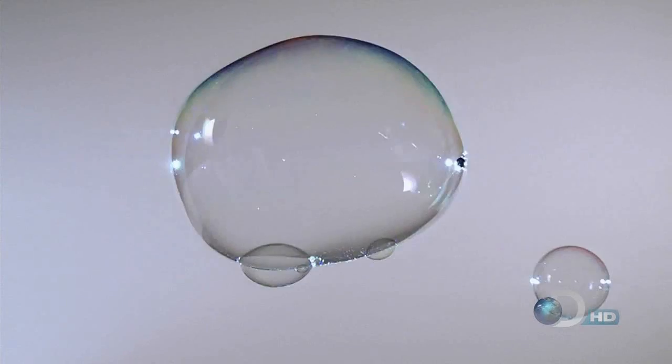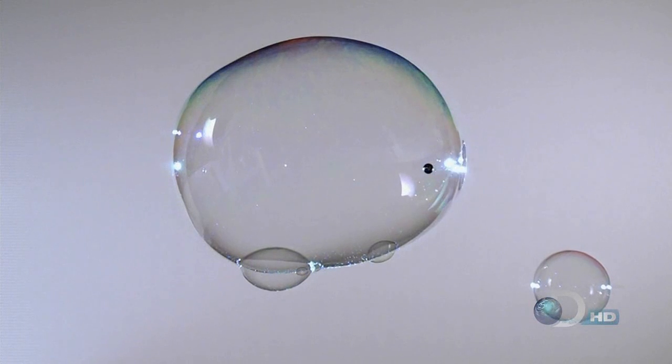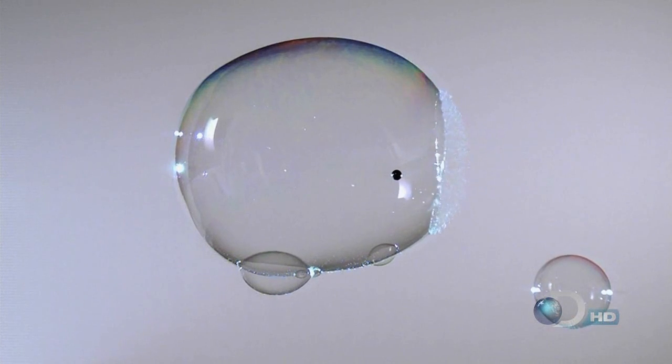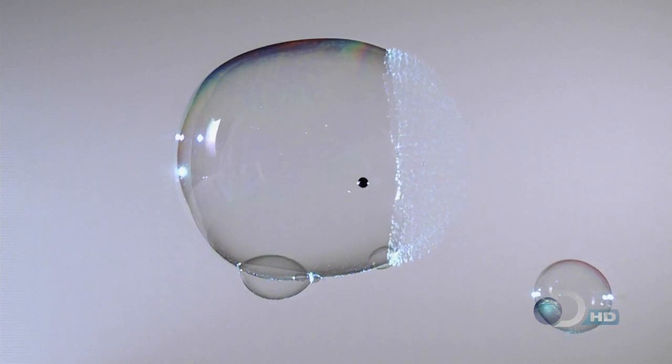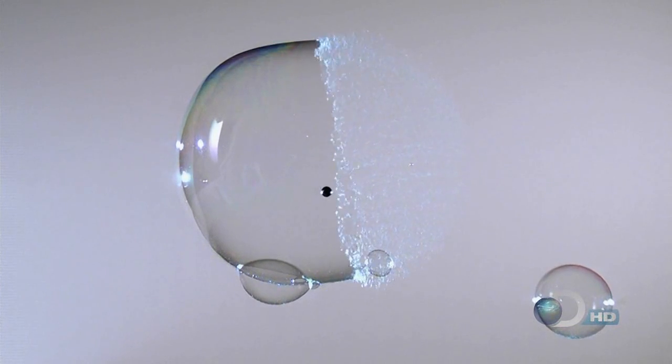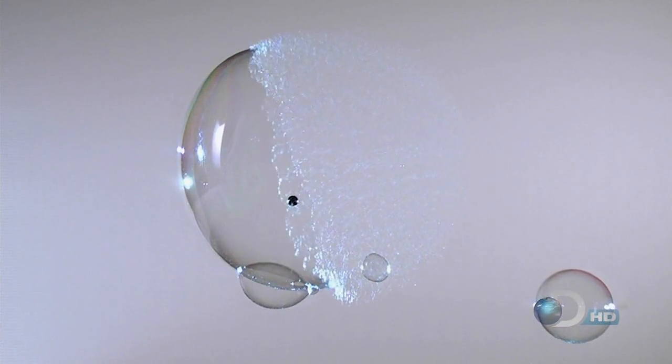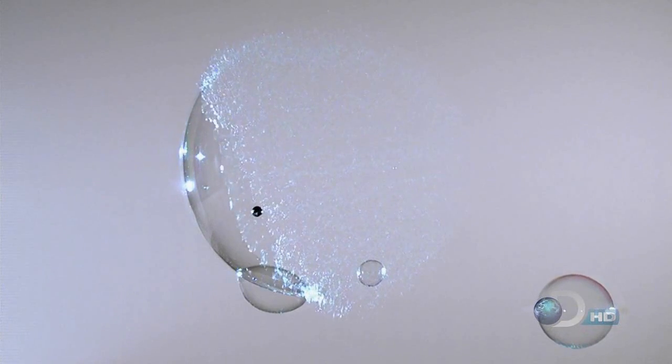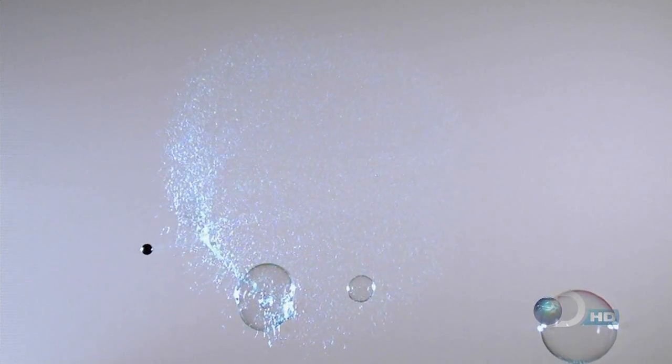Watch the bubble burst again, even slower this time. There's some complex science going on here. Surface tension holds the soap bubble molecules together, while the air inside the bubble is forcing them apart. When the bubble begins to tear, soap molecules shoot out in all directions as tiny droplets.